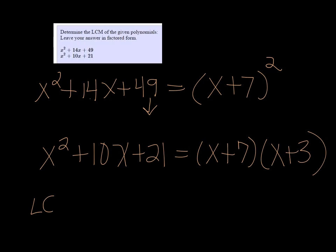Now, the least common multiple is going to have to be large enough to accommodate both of these polynomials. So in other words, if I were to take the LCM and divide by one of them, I would end up with an even answer. So I'm going to have to have at least x plus 7 squared, because that's what the first one has.